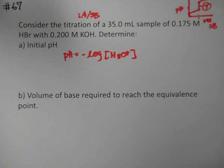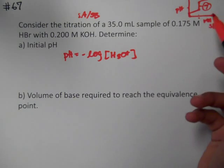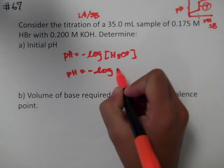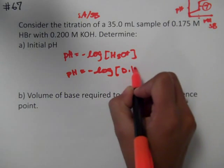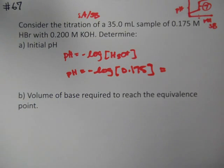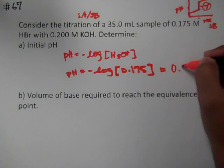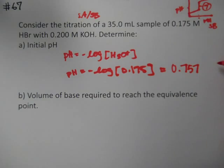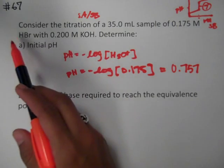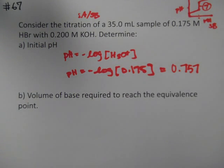So our concentration of hydronium is simply the concentration of our acid. So pH will equal negative log of 0.175, and that is a very tiny number—it's actually only 0.757. So our pH isn't even 1 initially, but that makes sense; it's a really strong acid.